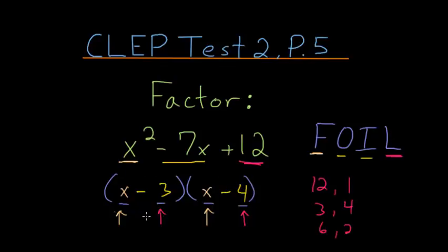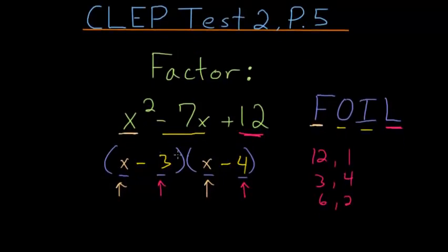And when you're first learning how to factor, it's always a good idea to check your answer. So to do that, let's actually FOIL this out. We use the first terms, x times x. So we have x squared. And then we have the outer terms, this x and this minus 4 multiply together. Gives us minus 4x.